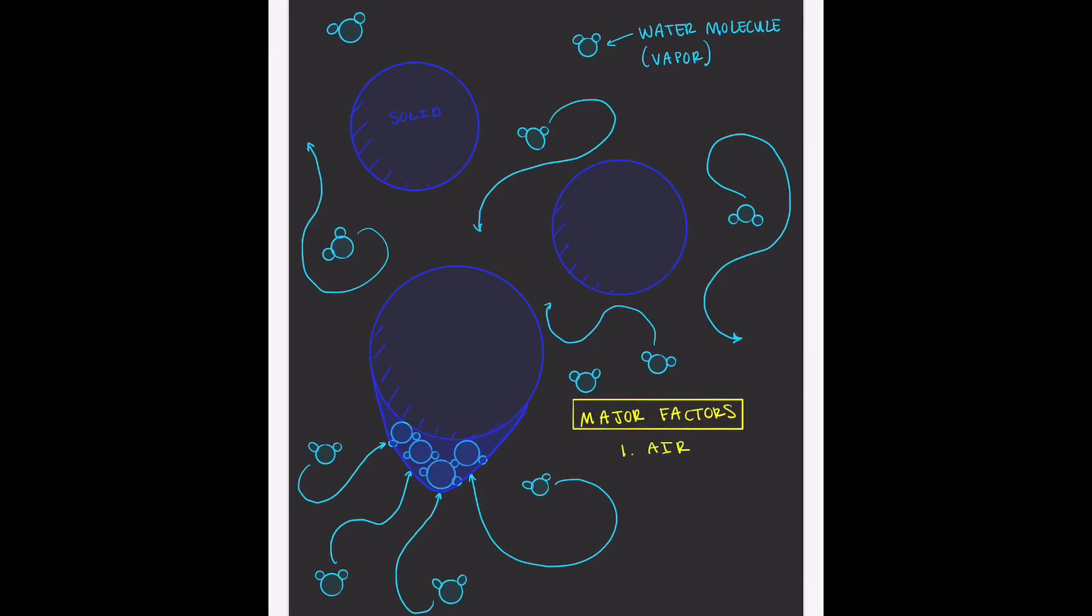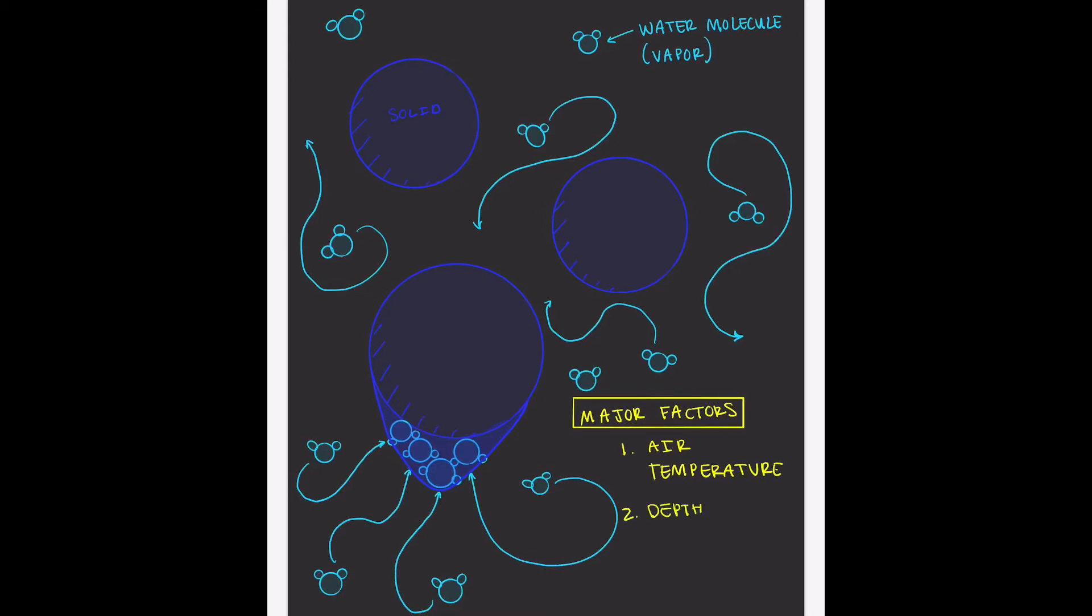The first is air temperature. So the temperature of the air outside of the snowpack. And the second is the total depth of the snowpack. So I'm going to explain how these two factors, air temperature and snowpack depth, drive the movement of water molecules and change the structure of snow grains.